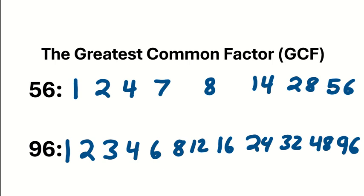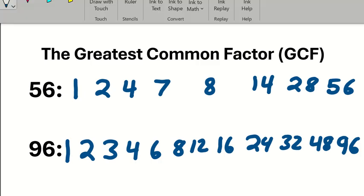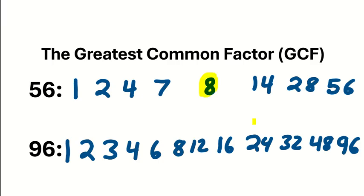We have all of our factor pairs. And then of course, we remember that the greatest common factor is the largest number that appears on both lists. So in this case, the biggest number that appears on both lists is going to be the number 8. Thus 8 is the greatest common factor.